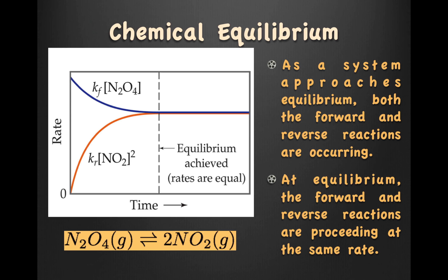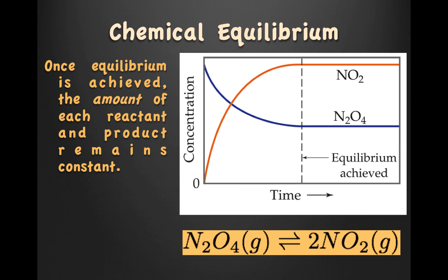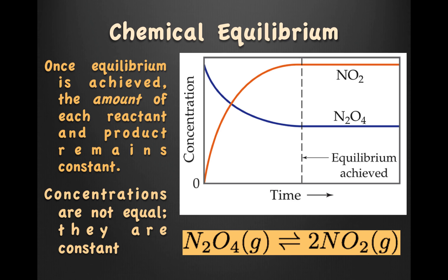At equilibrium, the forward and reverse reactions are proceeding at the same rate. Once equilibrium is achieved, the amount of each reactant and product remains constant. Take a look at this diagram. When do the rates become equal? The rates become equal when the concentration no longer changes. Notice that the concentration does not have to be equal — they just have to be constant. Concentration becomes constant, not equal.